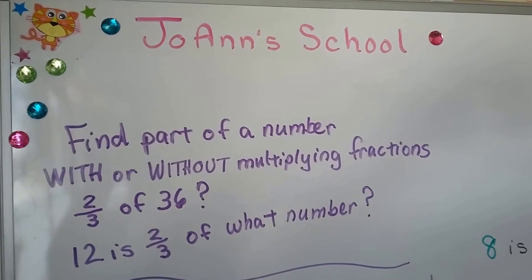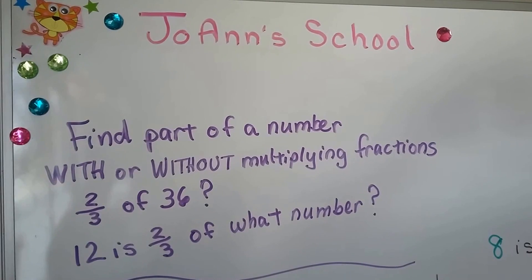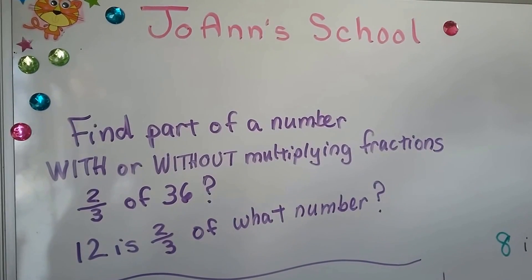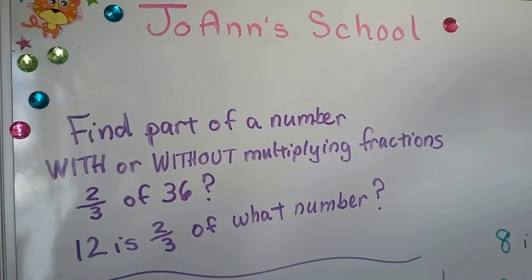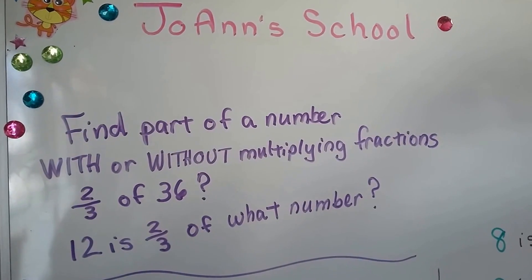We're going to find part of a number with or without multiplying fractions. If you want to find two-thirds of 36 or 12 is two-thirds of what number, we can do it with or without multiplying fractions.